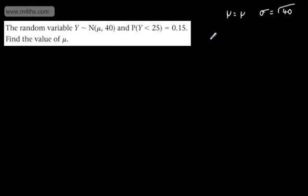So let's consider our transformation. What we're going to have then is the probability of Z being less than. What we need then is 25. So it's going to be 25 minus μ divided now by root 40. Okay, don't make the error of putting 40 in. And we're told that that is going to be equal to 0.15.